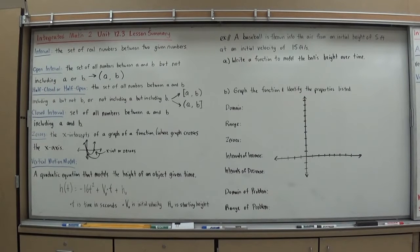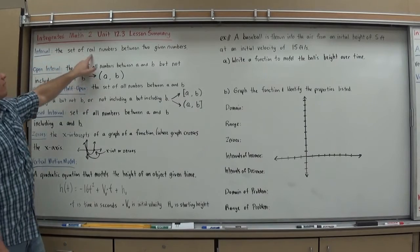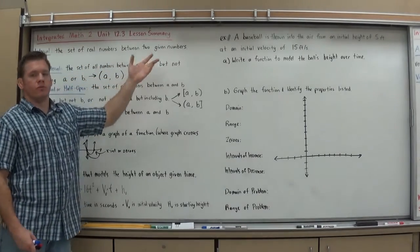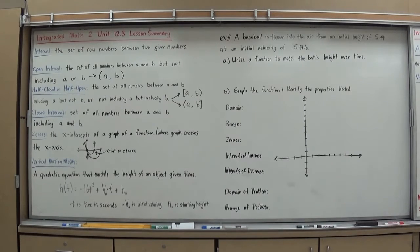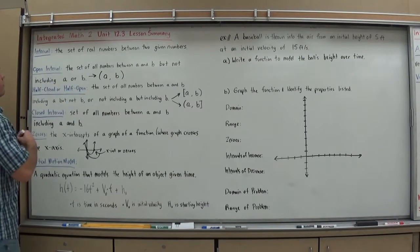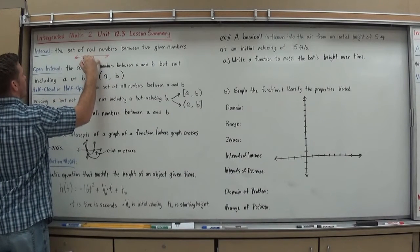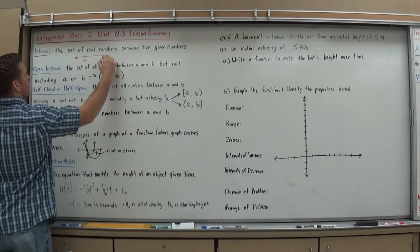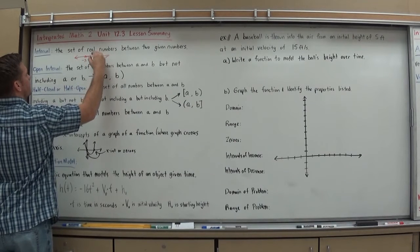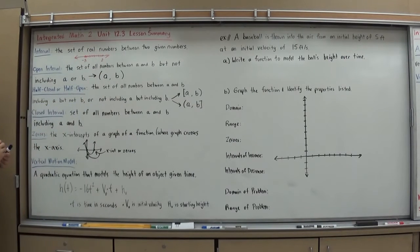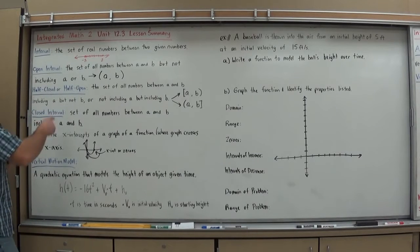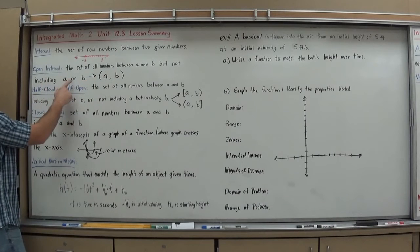So, let's start with what interval notation is. First of all, an interval is a set of real numbers between any two given numbers. Interval notation is a way of representing that. For example, if I had an inequality, I could have the numbers between negative 3 and 2. I'm now trying to talk about the numbers between negative 3 and 2. I can represent that in interval notation. There's different types of intervals. There's open, which is a set of all numbers between A and B, but not including it.